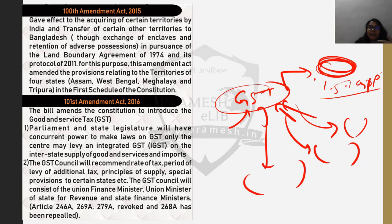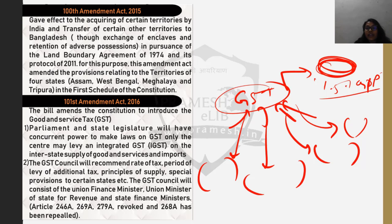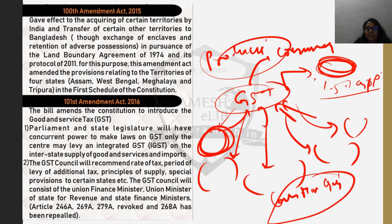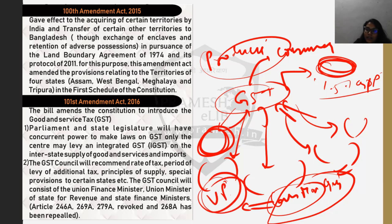With GST, tax litigations and pending judicial cases in taxation departments may reduce. India might become a better investment destination because it is the complex tax laws that make India less competitive. Additionally, GST has shifted taxation from a producer-based tax to a consumer-based tax. Earlier, if cars were manufactured in Gujarat, taxes went to Gujarat's treasury.